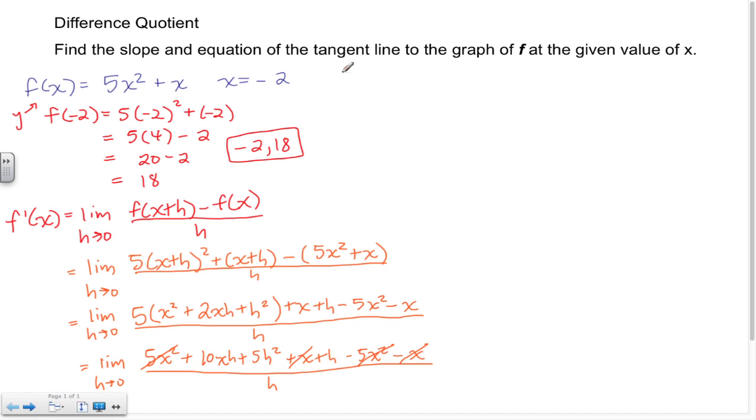All right, that's all the canceling for now, but I do see for my numerator I have a GCF of h, so let me factor that out. So equals the limit as h approaches 0, factor it out an h, so I have 10x plus 5h plus 1, where all of this is divided by h.